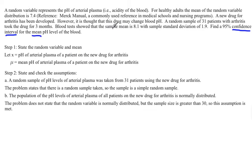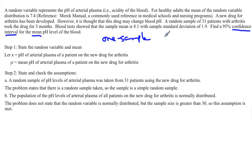I notice that we're talking about just a sample mean of one value that was done — there was just one sample taken. So this is a one-sample procedure. Because we're doing a mean, it is called a T interval. So we're doing a one-sample T interval.